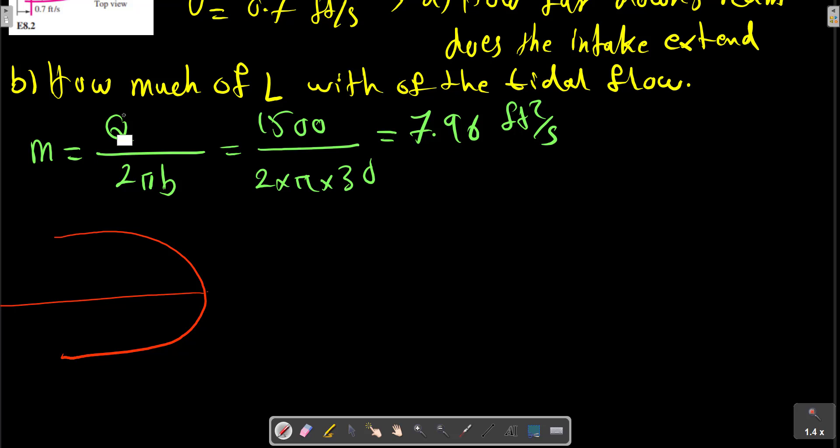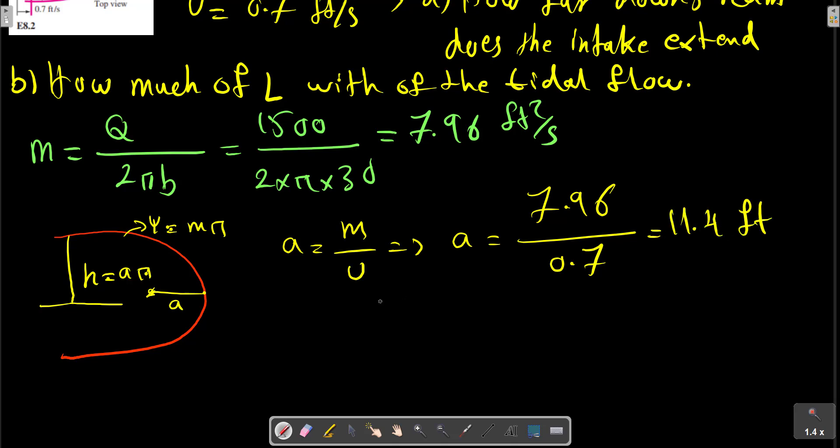If we consider the sink at distance A, h equals Aπ, and A equals m over U. So first we can calculate A equals m divided by the velocity, which equals 7.96 divided by 0.7, equals 11.4 feet. This is the point downstream where the intake effect extends.